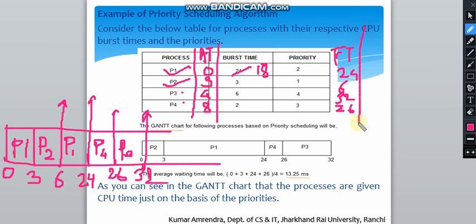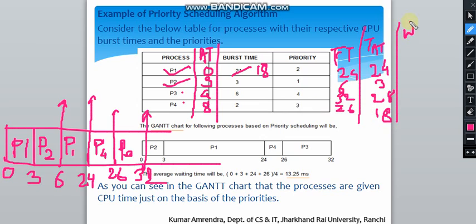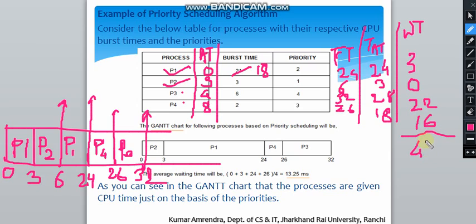Turnaround time equals finish time minus arrival time. For P1: 24 minus 0 is 24. For P3: 32 minus 4 is 28. For P4: 26 minus 8 is 18. Waiting time equals turnaround time minus burst time. P1: 24 minus 21 is 3. P2: 6 minus 3 is 0 (wait is 0 since it ran immediately after arrival). P3: 28 minus 6 is 22. P4: 18 minus 2 is 16. The sum of waiting times is 41, giving an average waiting time of 10.25.